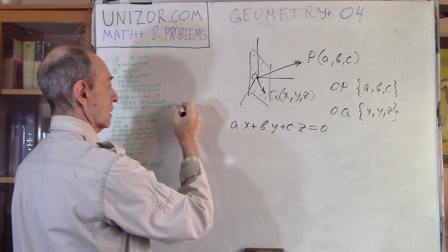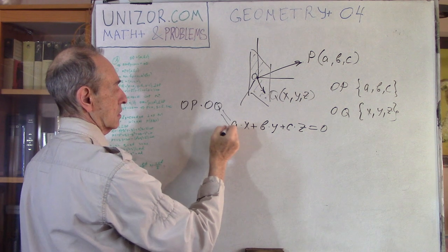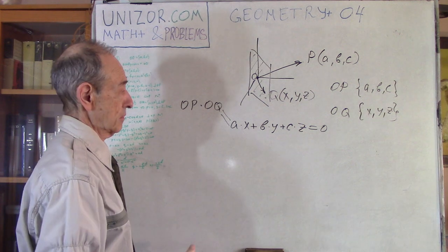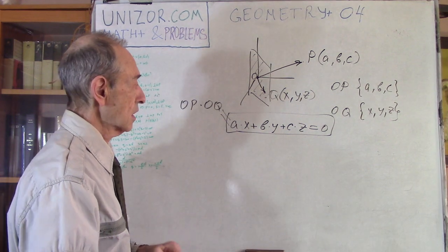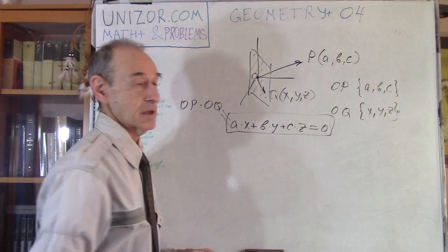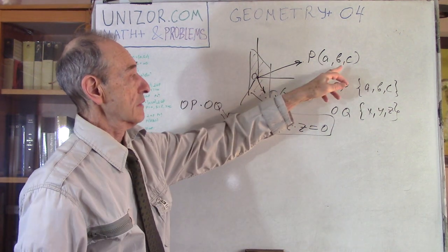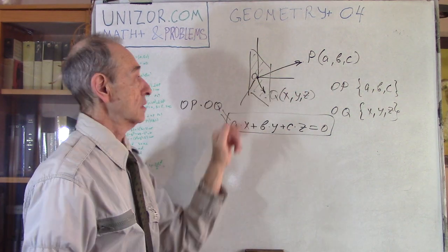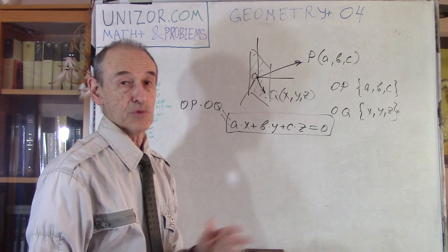Vector OP is, by assumption, perpendicular to this plane. Since OP is perpendicular to the plane, it is perpendicular to vector OQ. We know that perpendicular vectors have a scalar product equal to zero in Cartesian coordinates, which gives us: A times X plus B times Y plus C times Z equals zero. This is the equation — every point (X, Y, Z) on the plane must satisfy it. So if you have vector (A, B, C) perpendicular to the plane through the origin, this is the equation of the plane.